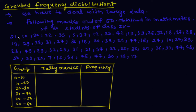Now, for 0 to 10, there are only 2 marks, so the frequency is 2. For 10 to 20, counting the entries: 1, 2, 3, 4, 5 and then 5, 4, 5 — only 10 entries. So the frequency is 10.